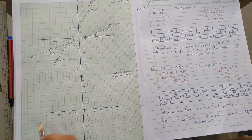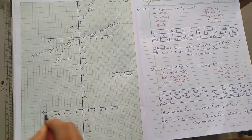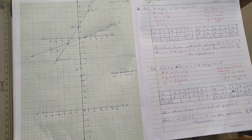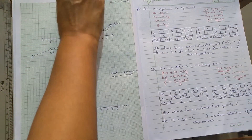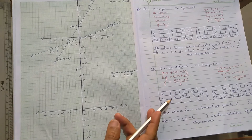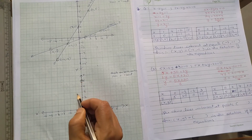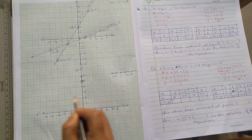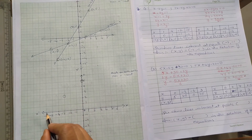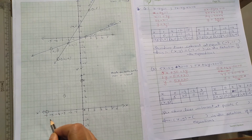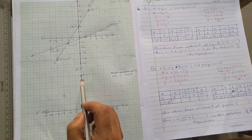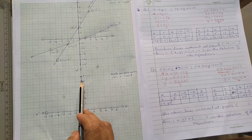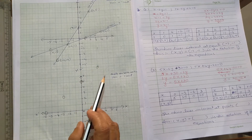Now plot the points on the graph. For the first equation: (0, 5) is over here. Next one is (−3, 2.5), it will come here. (−6, 0) is plotted. Then (3, 7.5) — since 6 and 7 are not plotted, 7.5 will come here somewhere.